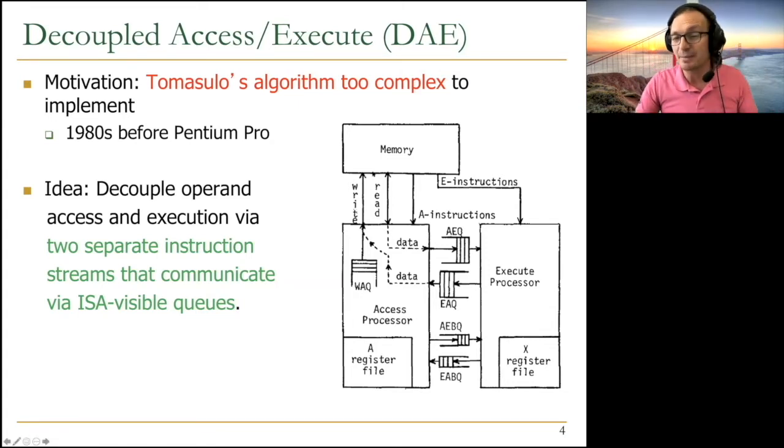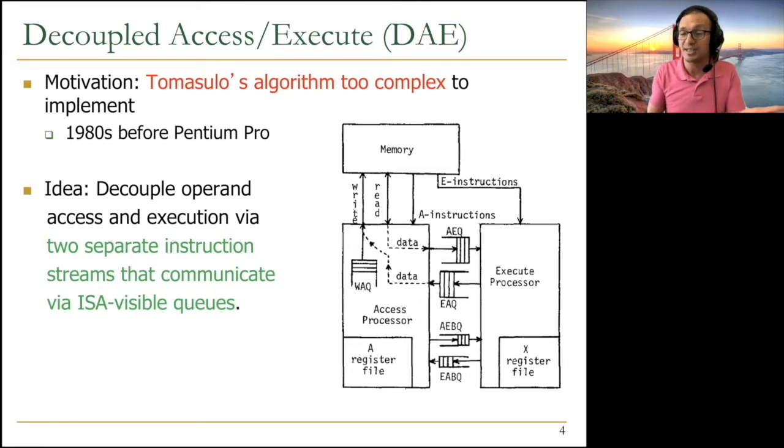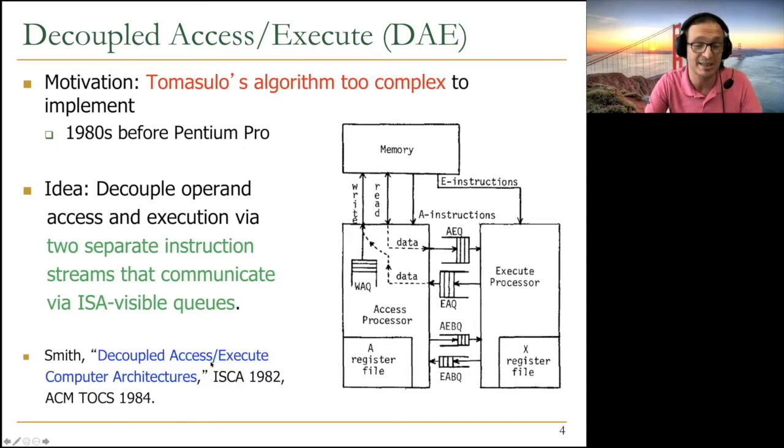Memory accesses may be bottlenecked by memory, but computation may not be bottlenecked. So you keep doing computation here while you're waiting for memory. And it may be the other way around also. Sometimes you may be waiting for long computations, but you may be continuing memory accesses. That's the beauty of it. And it was introduced by Jim Smith in the seminal paper in ISCA 1982. Its basic principles are applied in computing systems today, but not exactly as it was envisioned.